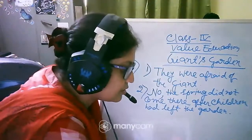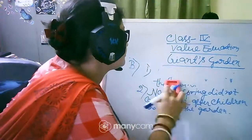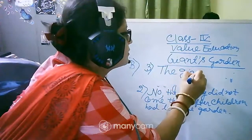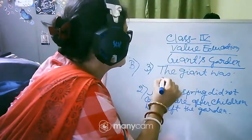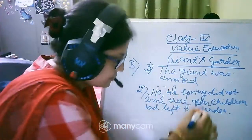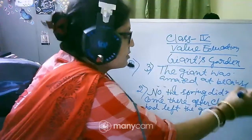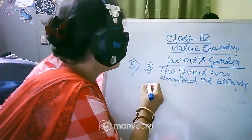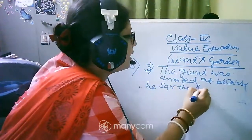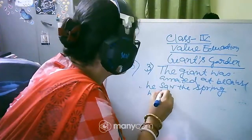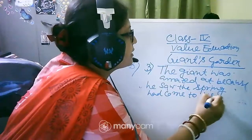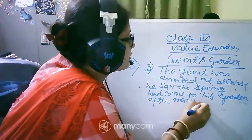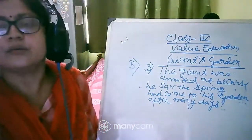So number three, I can write in the first questions. Giant was amazed at, amazed at because, because he saw the spring had come, had come to his garden after many days. So only you can write like this.